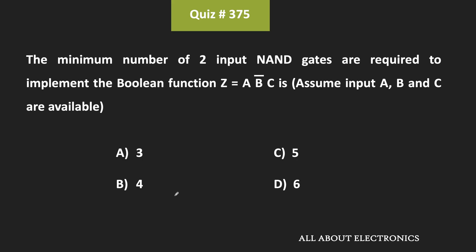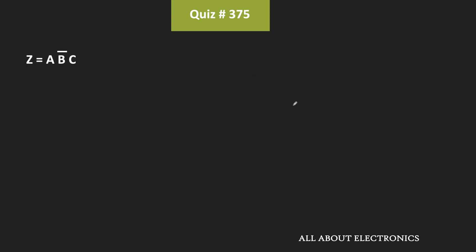Hey friends, welcome to the YouTube channel all about electronics. In this question we have been given a Boolean function and asked to find the minimum number of two-input NAND gates required to realize this Boolean expression. First, we will realize it using AND, OR, and NOT gates. Here, A·B̄C can also be written as AC·B̄.